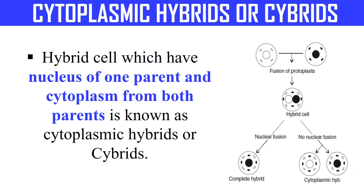Cybrids are hybrid cells which contain the nucleus from one parent and cytoplasm from both parents. Generally, hybrid cells are formed from the fusion of two different cells, and after fusion the hybrid cell contains the nucleus and cytoplasm of both parents. But in the case of cytoplasmic hybrids or cybrids, they only contain the nucleus from one parent while the cytoplasm from both parents is present.